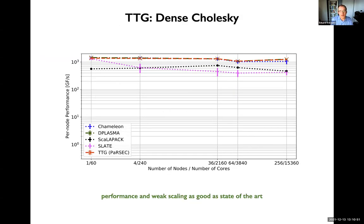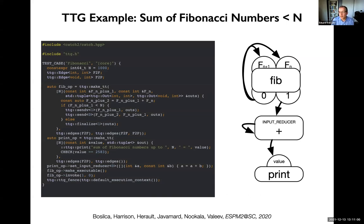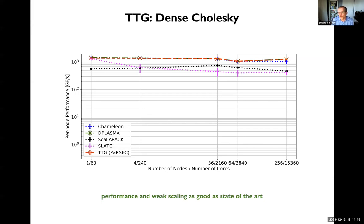Let's look quickly at performance. The high-level composition in TTG actually allows us to specify fairly complicated algorithms quite compactly, and due to the quality of implementation, the performance we get out of it is competitive with state of the art — we can have our cake and eat it too. The first example is dense block Cholesky, which is the standard benchmark given that more than half of our team are from ICL at the University of Tennessee.